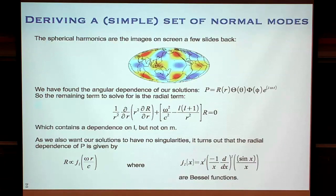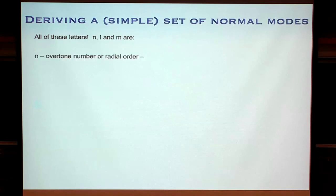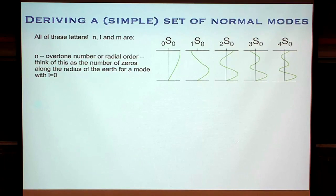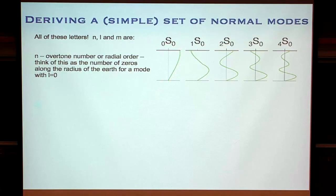So we've got our spherical harmonics and our Bessel functions — that's all you need to do the normal modes of this simple fake planet. Now let's define those letters. N is the overtone number, sometimes called the radial order. You can think of this as the number of zeros you get in the radial displacement function: if the displacement slowly increases and never goes back to zero, that's a radial order of zero. As N increases to one, two, three — you get places in the Earth where there's no displacement.